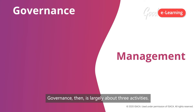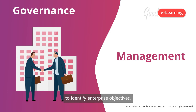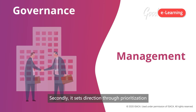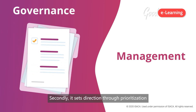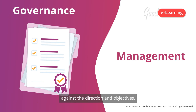Governance then is largely about three activities. Firstly, it ensures that the stakeholders' needs and options are evaluated to identify enterprise objectives. Secondly, it sets direction through prioritization. And finally, it monitors the compliance and performance against the direction and objectives.